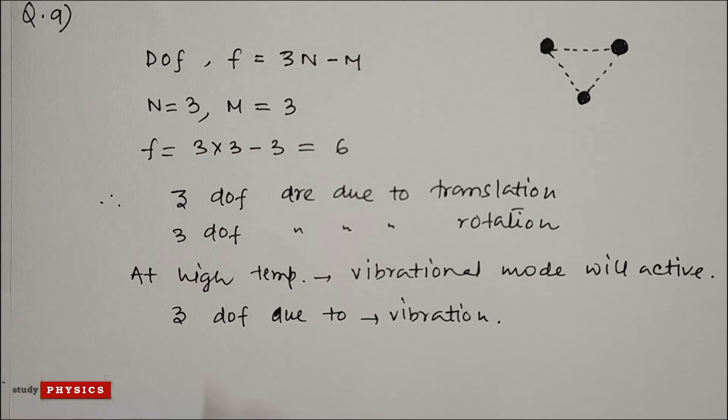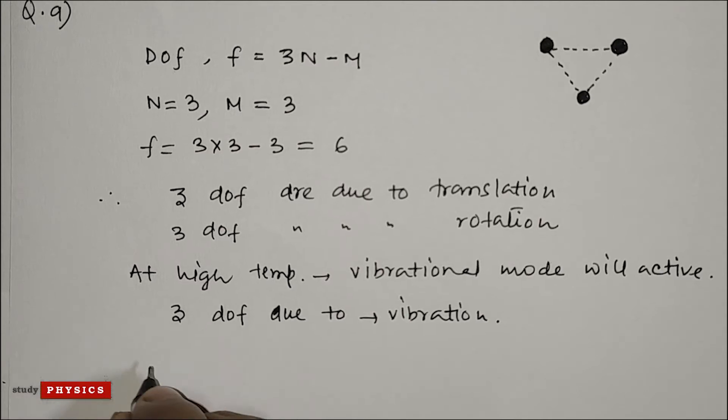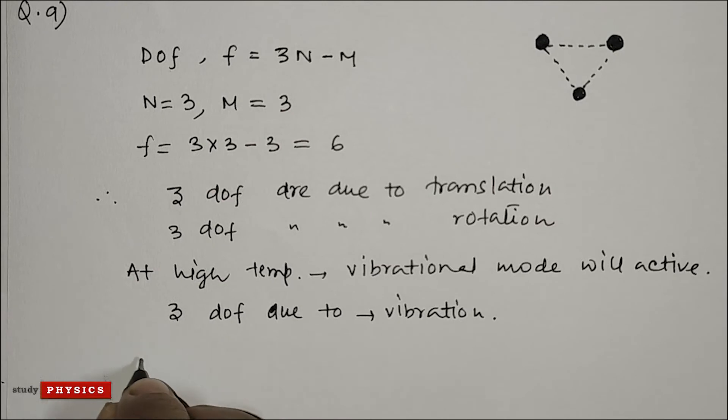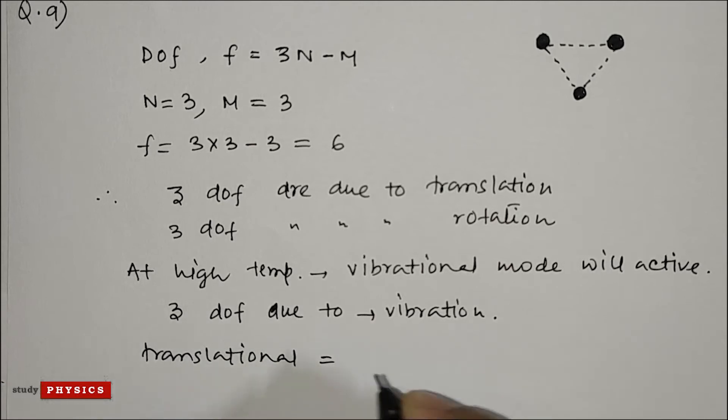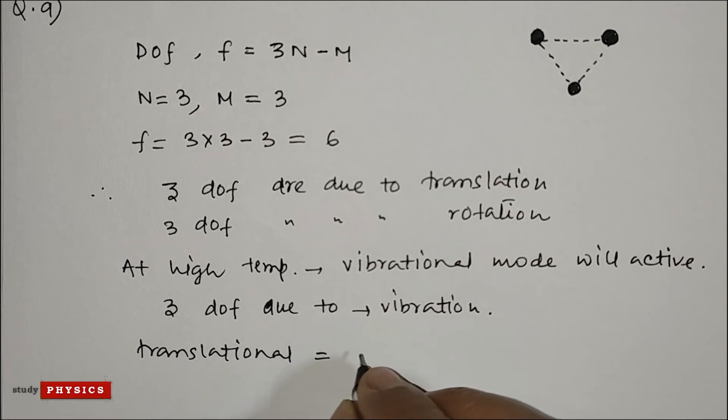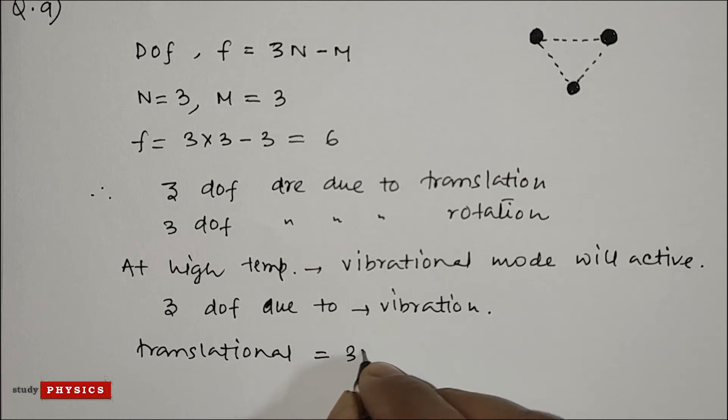...we know that each translational and rotational degree of freedom contributes half k_B T. So for translational, three degrees of freedom contribute half k_B T each, so 3 times half k_B T...